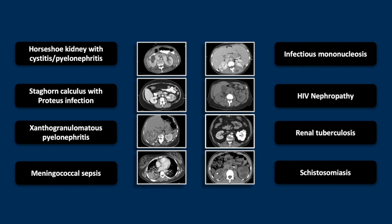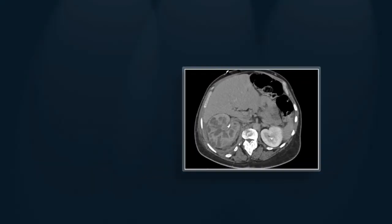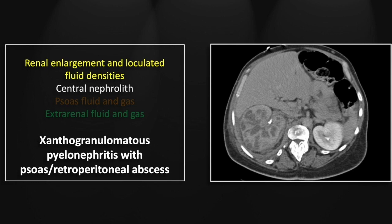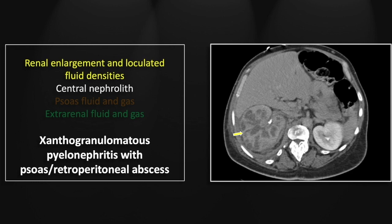Our next case is of xanthogranulomatous pyelonephritis. Essentially a classic case of XGP with marked enlargement of the right kidney, multiple loculated fluid densities within that expanded parenchyma, and a central nephrolith — a finding essentially required for this diagnosis.